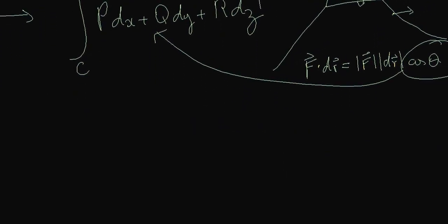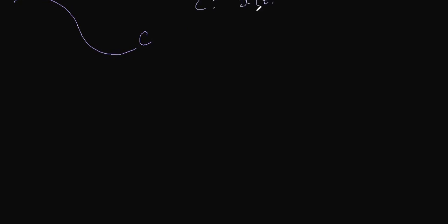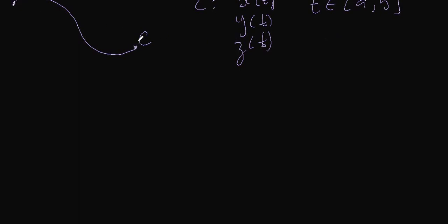Usually how you do this is you take the curve C and write it in parametric form. So you say that C is equal to x(t), y(t), and z(t), and T goes from a point A to a point B — a finite curve from A to B. You want to take the line integral along this curve from A to B, so T goes from A to B.